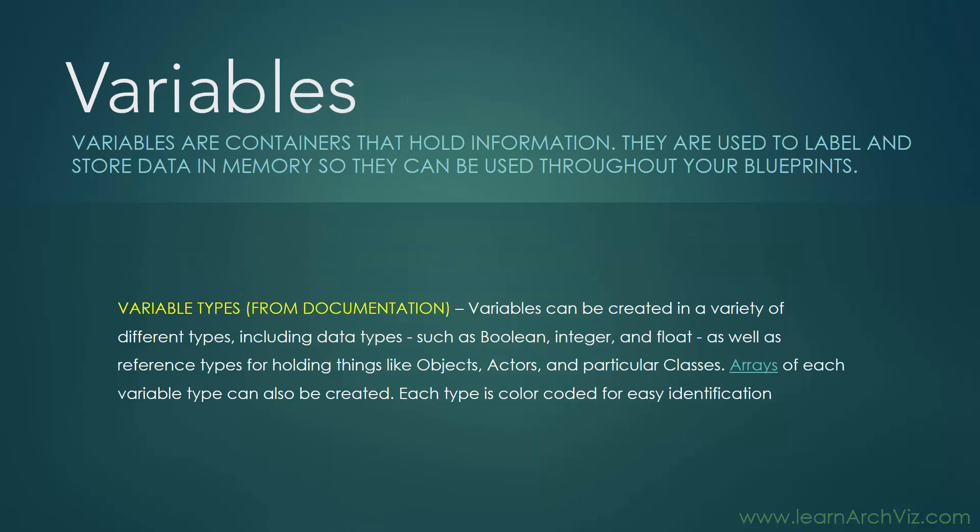Variables. If you're not familiar with programming, you might not know what variables are, but we're going to use them quite a bit in our scripting. Variables are containers that hold information. They are used to label and store data in memory so they can be used throughout your blueprints. From the documentation: variables can be created in a variety of different types, including data types such as Boolean, Integer, and Float, as well as reference types for holding things like objects, actors, and particular classes. Arrays of each variable type can also be created, and each type is color coded for easy identification.